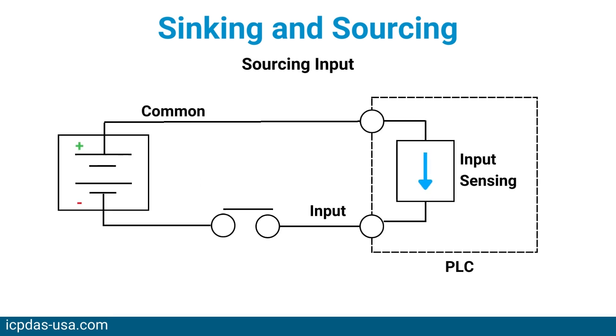The device receiving the signal provides power for the input signal. It must be connected to a sinking output, such as a two-wired transmitter, which uses the power from the receiving device.